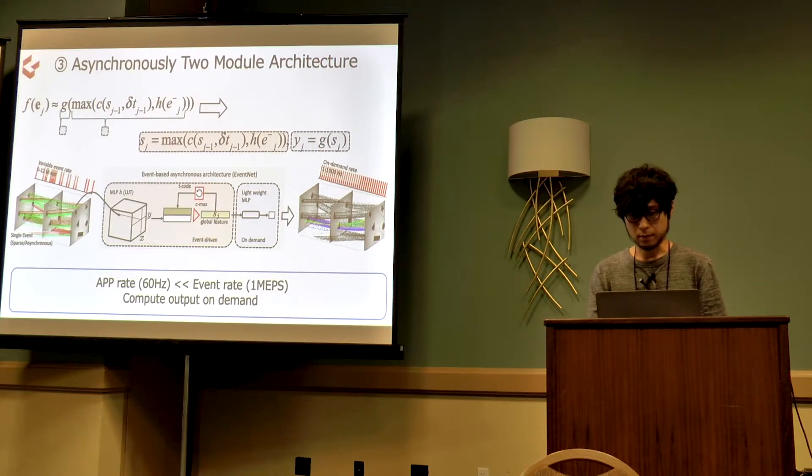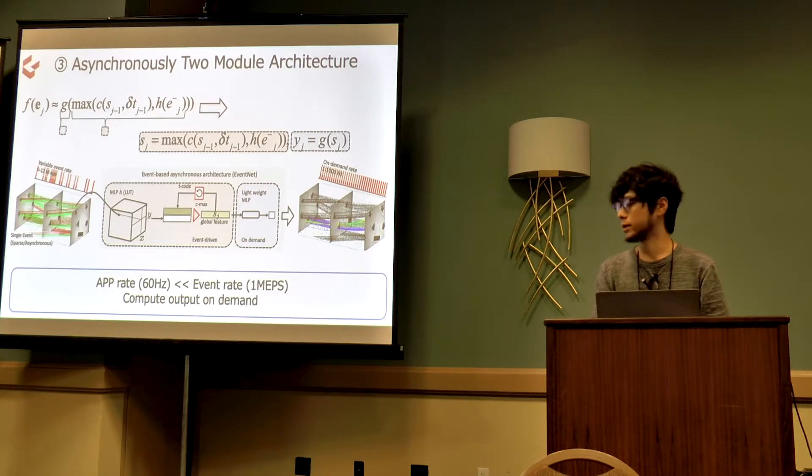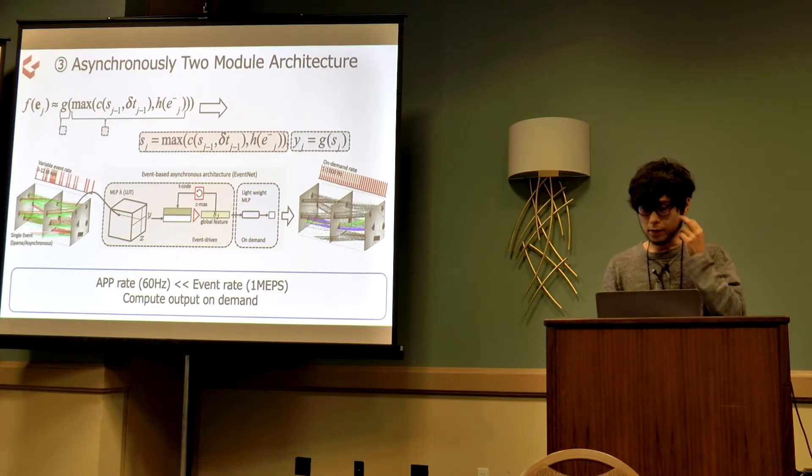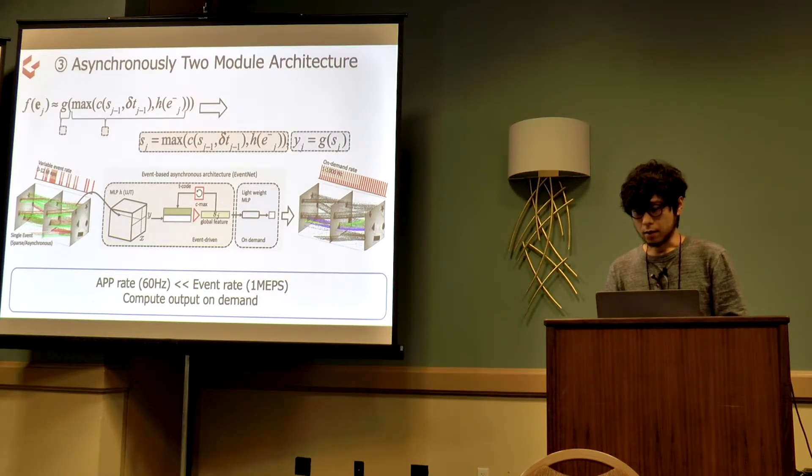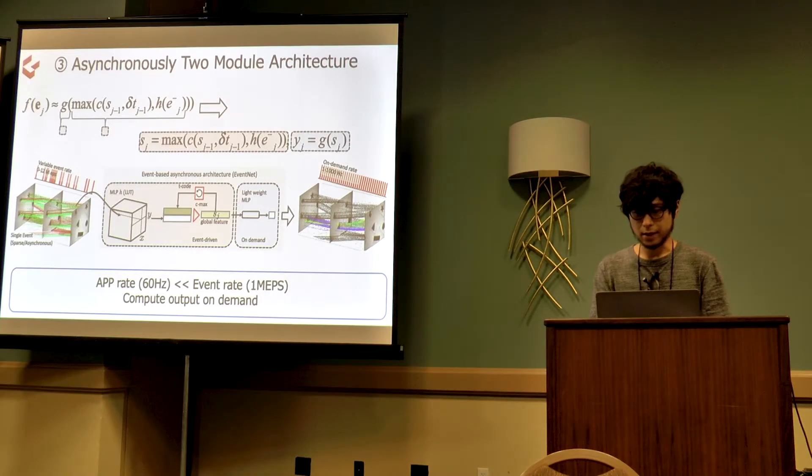The last one is asynchronous two-module architecture. Depending on the application, computing the output at event rate will be unnecessarily fast. To avoid wasteful computation of output, we have separated the network into two modules that work asynchronously with each other. The first module updates the global feature at variable event rate, and the second module computes the output on demand from the application. Usually, it is a uniform rate.